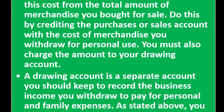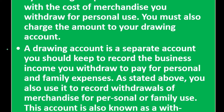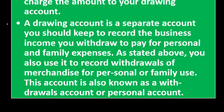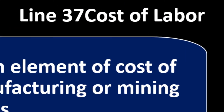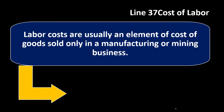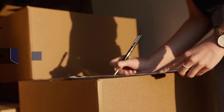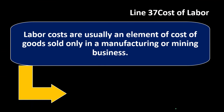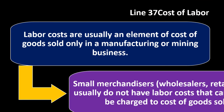You must charge the withdrawal amount to your drawing account — a separate account to record business income you withdraw for personal and family expenses, also known as a withdrawals account or personal account. Line 37, cost of labor: labor costs are usually an element of cost of goods only in a manufacturing or mining business. If you're just buying inventory and marking it up, you won't include labor here. But if you're making the inventory with wage labor, that's when you use this line, because labor is part of the cost of the inventory.